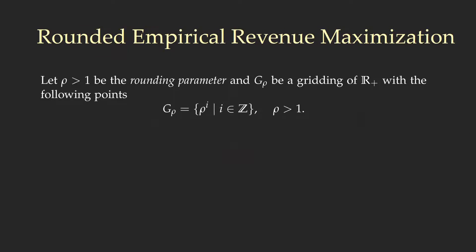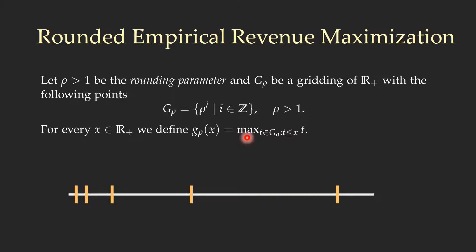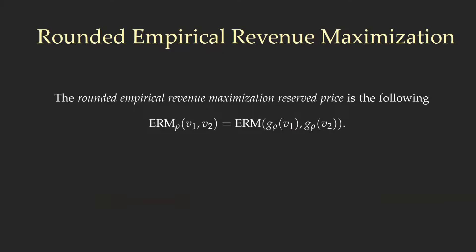To define the rounded version of the ERM, we first need a gridding of the positive real line. We define the set of points G_rho as all the possible positive and negative powers of the number rho, which is greater than 1. For every real value x, the rounded value G_rho(x) is the largest element of G_rho that is less than x. The reserve price of the rounded ERM is then equal to the reserve price of the ERM, but with inputs not V1 and V2, but the rounded versions of V1 and V2.